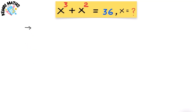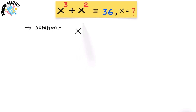It may look easy to take x² common, but don't do that here. The equation x³ + x² = 36 looks cubic, but with this smart factorization it becomes surprisingly simple. Let me show you.